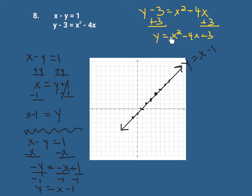If you have a positive leading coefficient, your parabola opens up. If you have a negative leading coefficient — say negative x squared — your parabola opens down. So the bottom shape is negative x squared and the top shape is positive x squared.